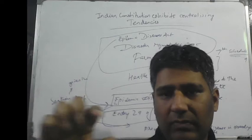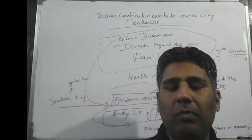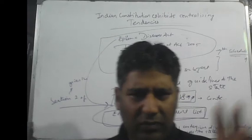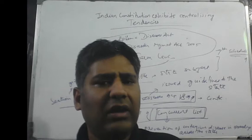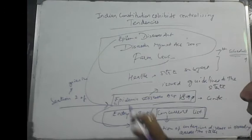Guidelines meant: these areas will be closed — lockdown. Industries will not be opened, schools will not be opened, but only essential commodities shops will be opened. Restriction of movement — like from 9 to 9 restriction is there. These types of guidelines were issued by the center invoking the Epidemic Diseases Act.